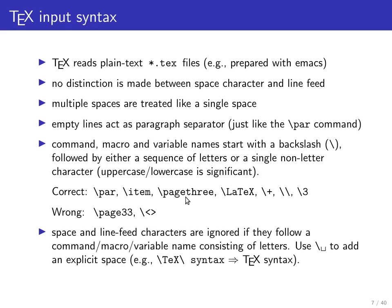The second macro format is a single non-letter character. So \+, \\, \3 — all these are valid macro names. The rule for where the macro name ends is simply after the first non-letter character. So you can't have \33, for example, because after the first non-letter digit the macro ends.